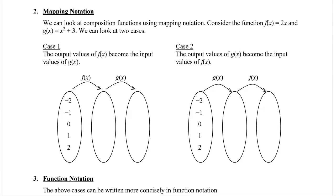We're going to take a look at two different cases. In the first case, the output values of f of x become the input values of g of x. We're going to start with these five x values from negative 2 to positive 2, and substitute them into f of x. So we're going to take 2 times all of these different x values: 2 times negative 2 is negative 4, 2 times negative 1 is negative 2, 2 times 0, 2 times 1, and 2 times 2.